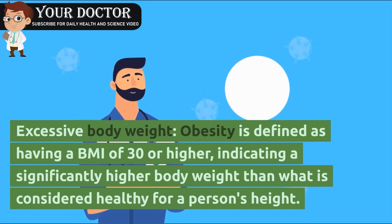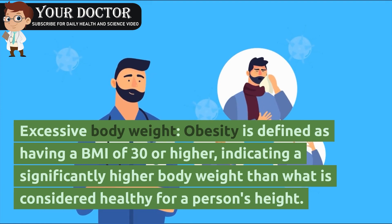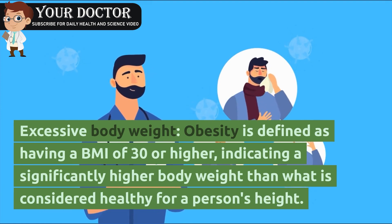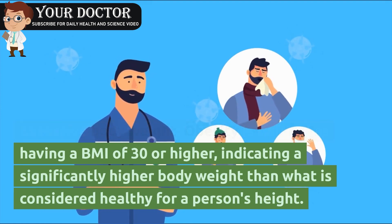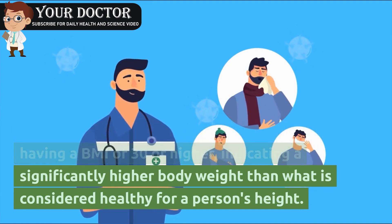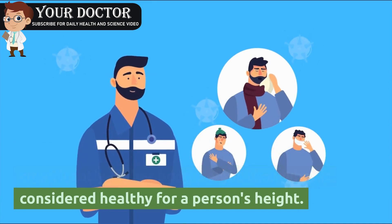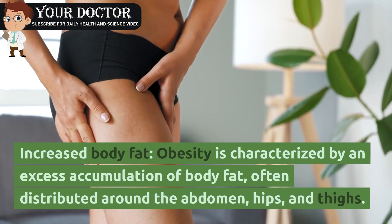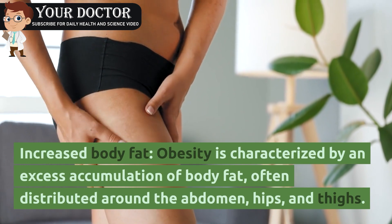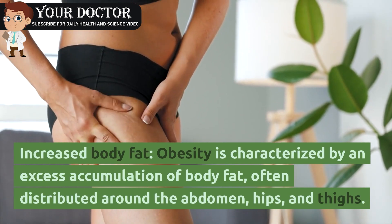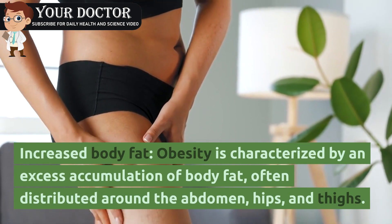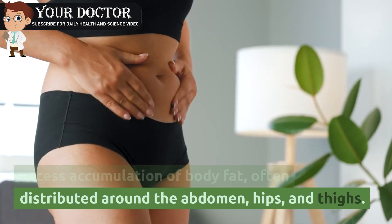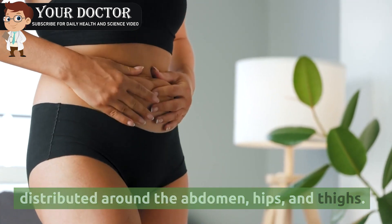Excessive body weight: Obesity is defined as having a BMI of 30 or higher, indicating a significantly higher body weight than what is considered healthy for a person's height. Increased body fat: Obesity is characterized by an excess accumulation of body fat, often distributed around the abdomen, hips, and thighs.